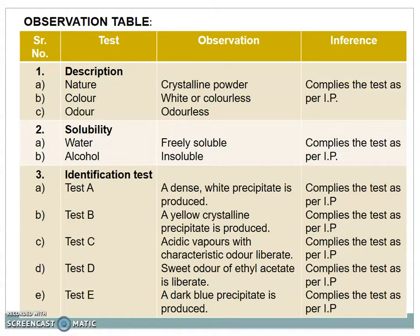Now after performing the practical, we move towards observation table. First is description: nature of the compound is crystalline powder, color is white or colorless, and odor is odorless, that means it complies the test as per IP. Solubility behavior: in water it is freely soluble and in alcohol it is soluble, that means it complies the test as per IP.